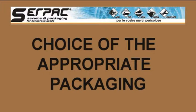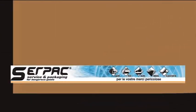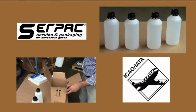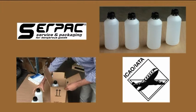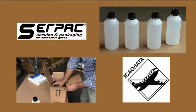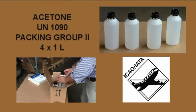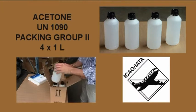In this video, we are going to analyze the packaging criteria of a dangerous goods shipment. As an example, we would like to ship via air these 4 plastic cans, containing each 1 liter of acetone.